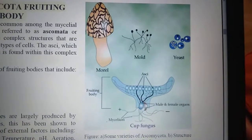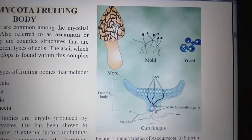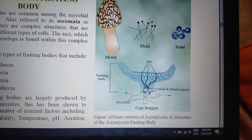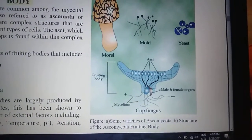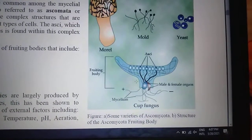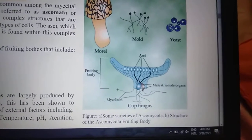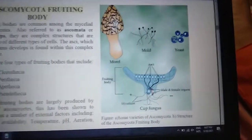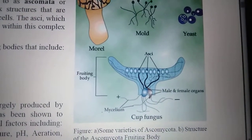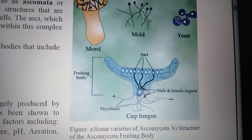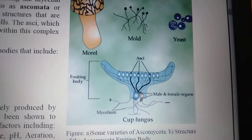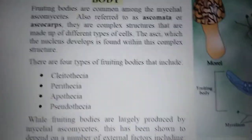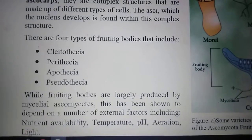Some examples include unicellular Ascomycota such as yeast, filamentous Ascomycota such as molds, and Ascomycetes with fruiting bodies. This fungus is known as morel, and these are cup-shaped fruiting bodies. There are 4 types of fruiting bodies that include Kleistrothecium, Perithecium, Apothecium, and Pseudothecium. Female organs, anthridia and archegonia, also develop in these structures.